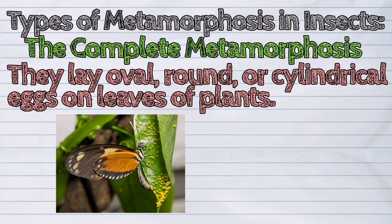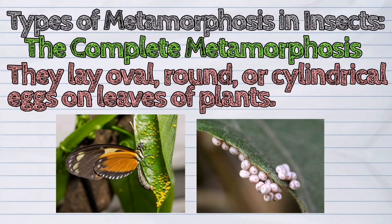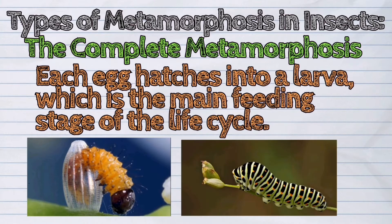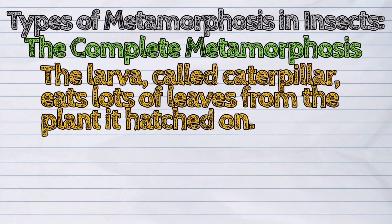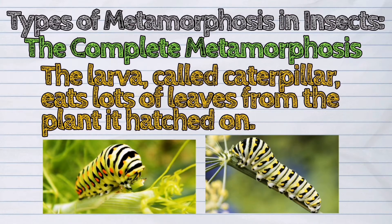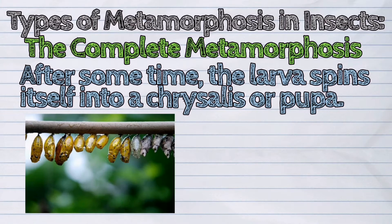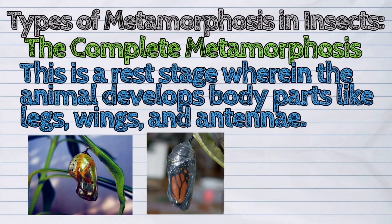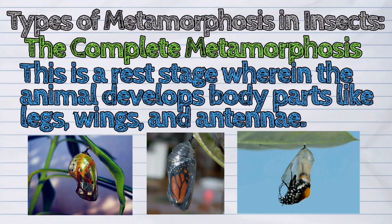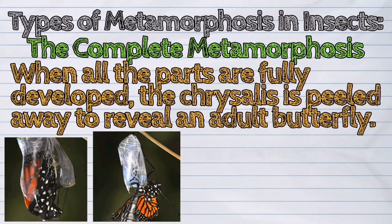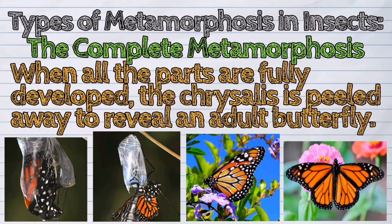They lay oval, round, or cylindrical eggs on leaves of plants. Each egg hatches into a larva, which is the main feeding stage of the life cycle. The larva, called caterpillar, eats lots of leaves from the plant it hatched on. After some time, the larva spins itself into a chrysalis or pupa. This is a rest stage wherein the animal develops body parts like legs, wings, and antennae. When all the parts are fully developed, the chrysalis is peeled away to reveal an adult butterfly. This completes the butterfly metamorphosis.